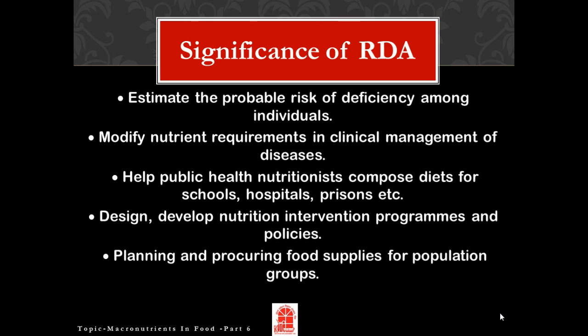Humans need a wide range of nutrients to lead a healthy and active life. This depends on age, body weight, physical activity, and physiological state such as pregnancy and lactation. The minimum amount that needs to be consumed to prevent symptoms of deficiency and maintain a satisfactory level of the nutrient in the body is termed the nutrient requirement. For infants and children, the requirement is the amount that will maintain a satisfactory rate of growth and development. For an adult, the nutrient requirement is the amount that will maintain body weight and prevent the depletion of the nutrient which may otherwise lead to deficiency.